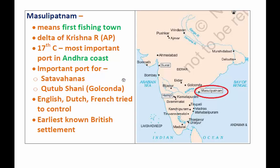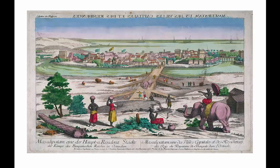The English, the Dutch, and the French all tried to control this port when they came to India. The earliest non-British settlement in India was at Masulipatnam — when Europeans first came to India, they first settled in this port.